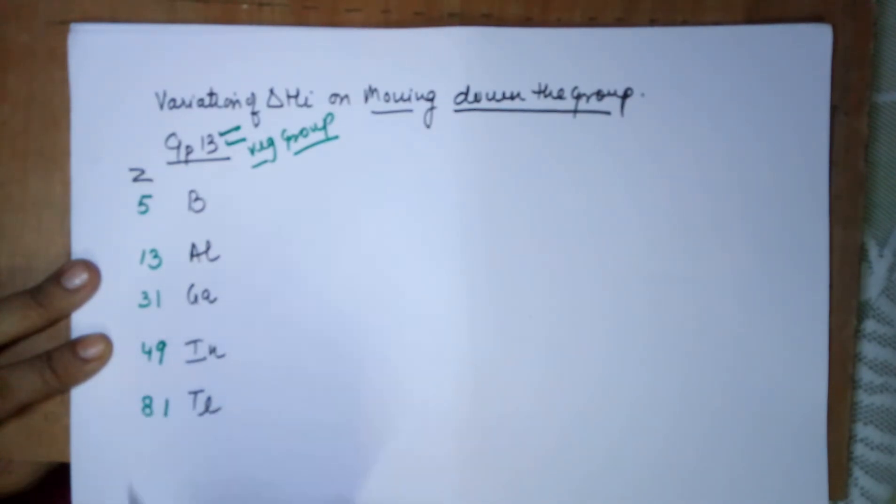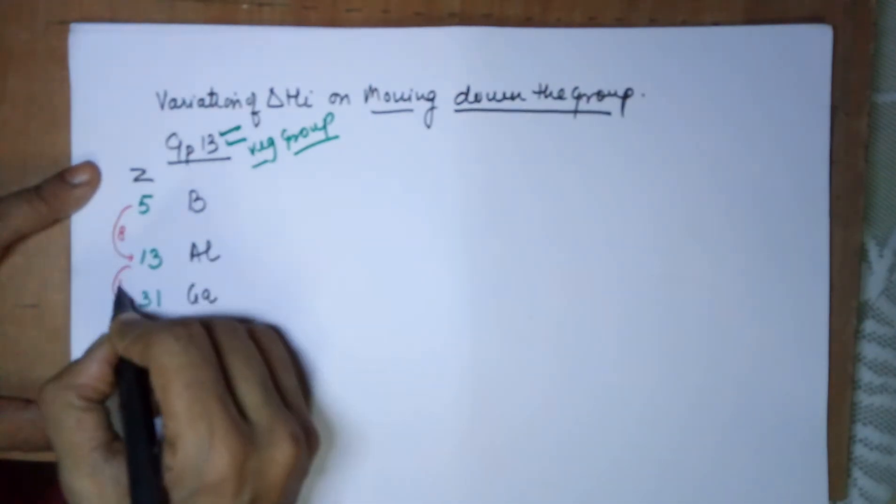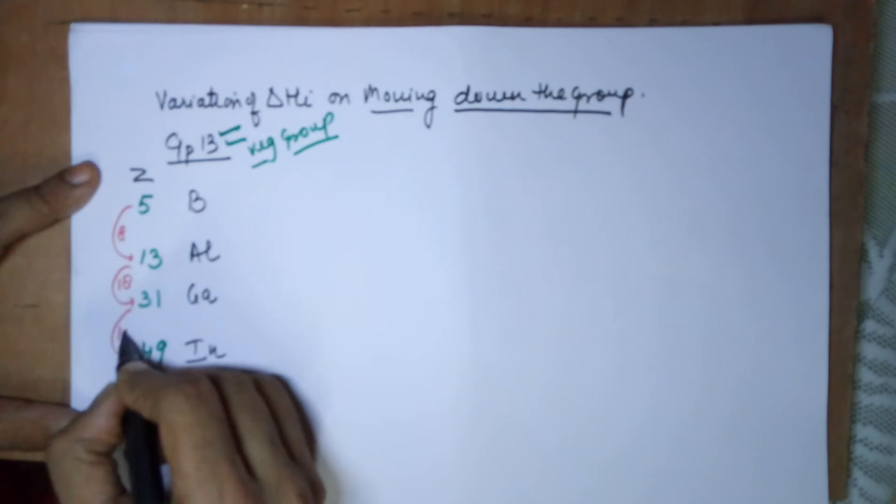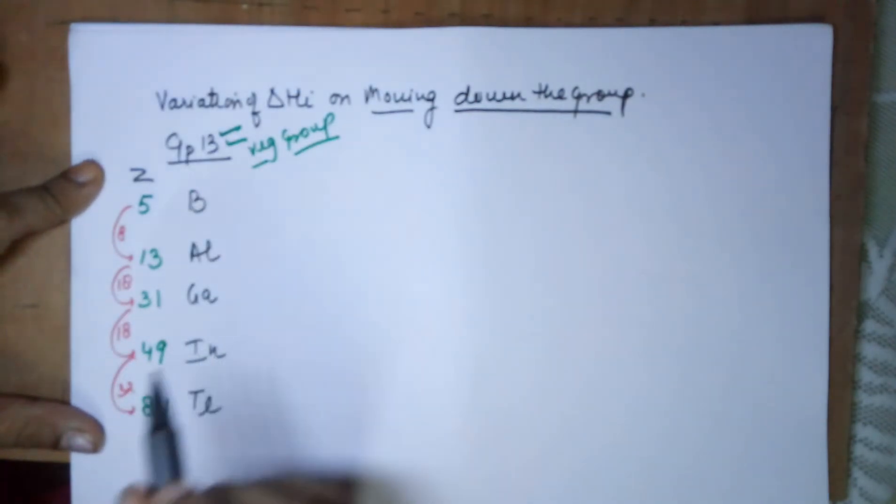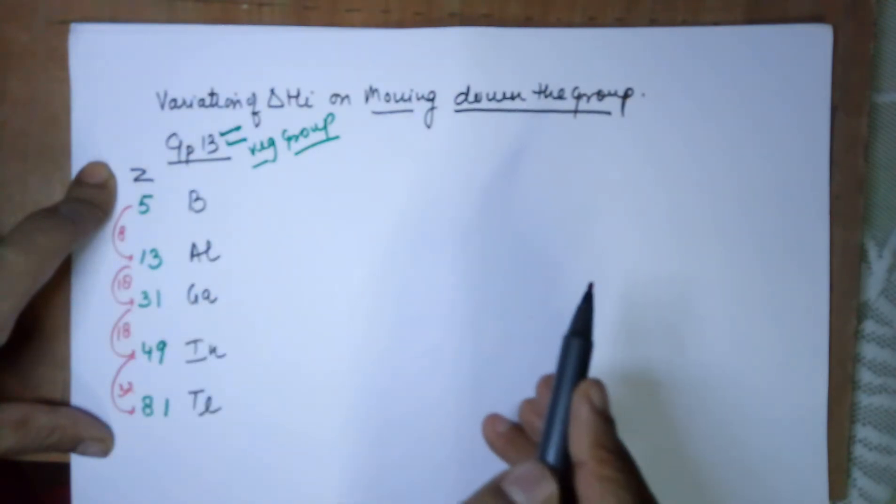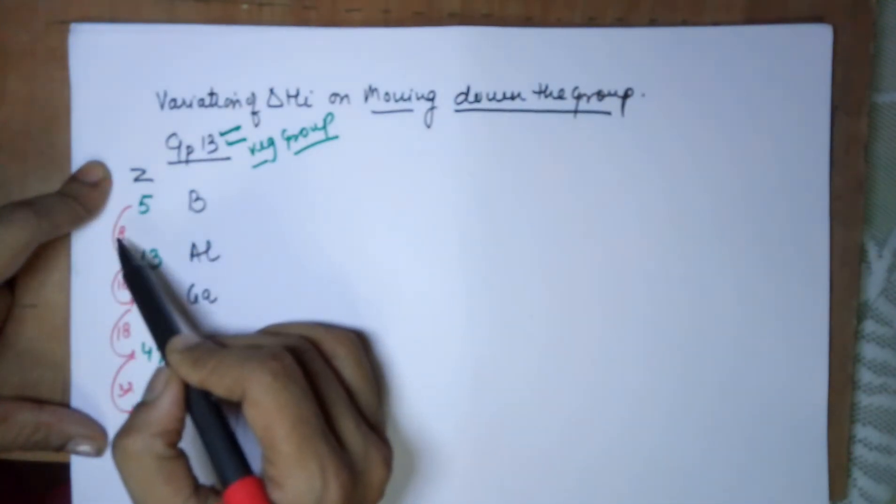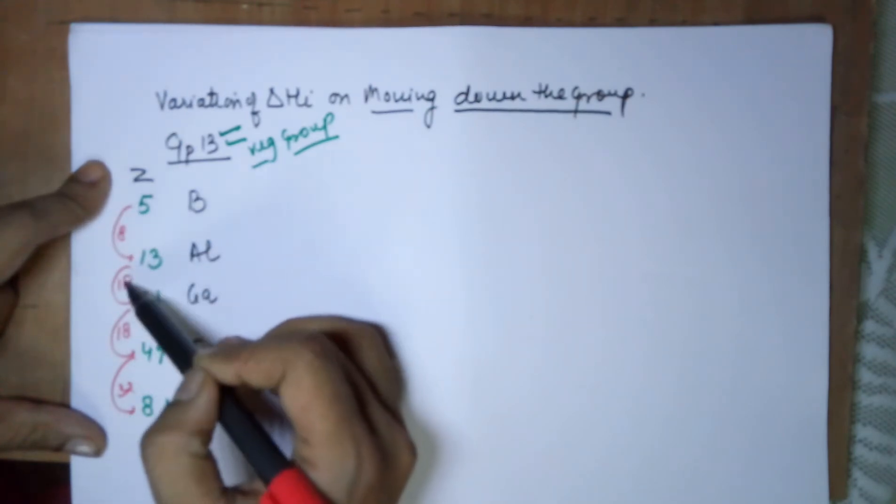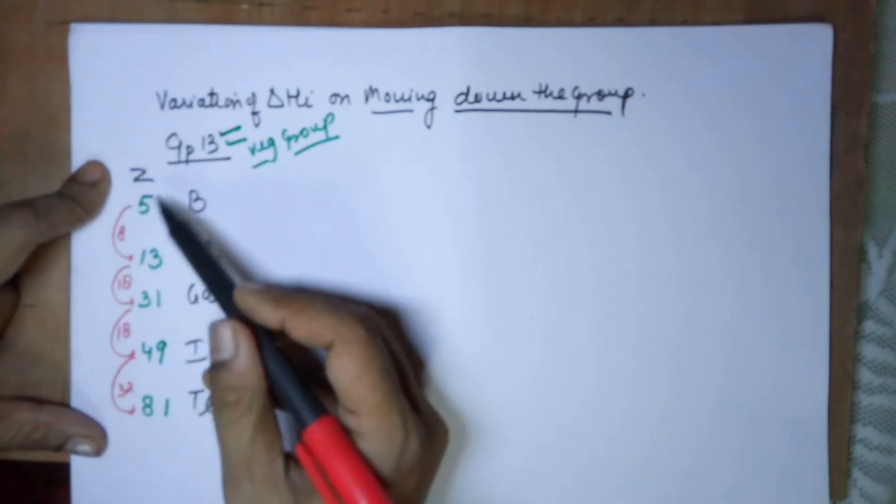So that was easy. If you have to locate the atomic numbers of elements below in a particular group, if you know the first, go on add 8, add 18, add another 18, then add 32. This is practically applicable to all groups from group 13 to 18. But if you are in group 1 and 2, then you would have to take two additions of 8, then two additions of 18, and then one addition of 32.